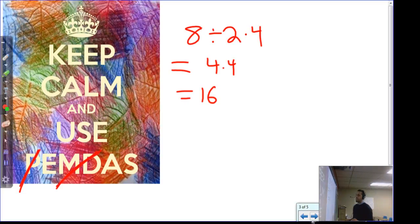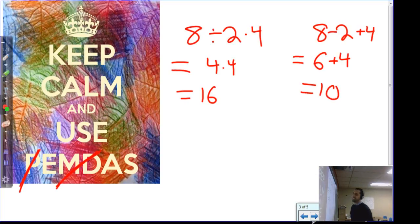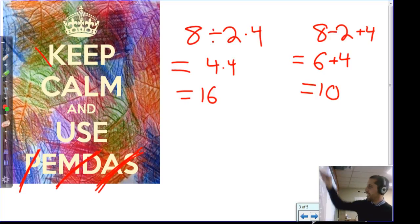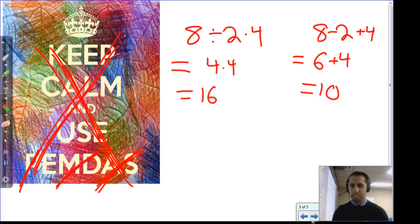Strike three: addition and subtraction. If we have 8 − 2 + 4, Gemma says left to right: 8 − 2 = 6, and 6 + 4 = 10. But following PEMDAS by the letters, you'd do addition first: 2 + 4 = 6, then 8 − 6 = 2 — again, way off. So follow Gemma and she'll never lead you wrong.